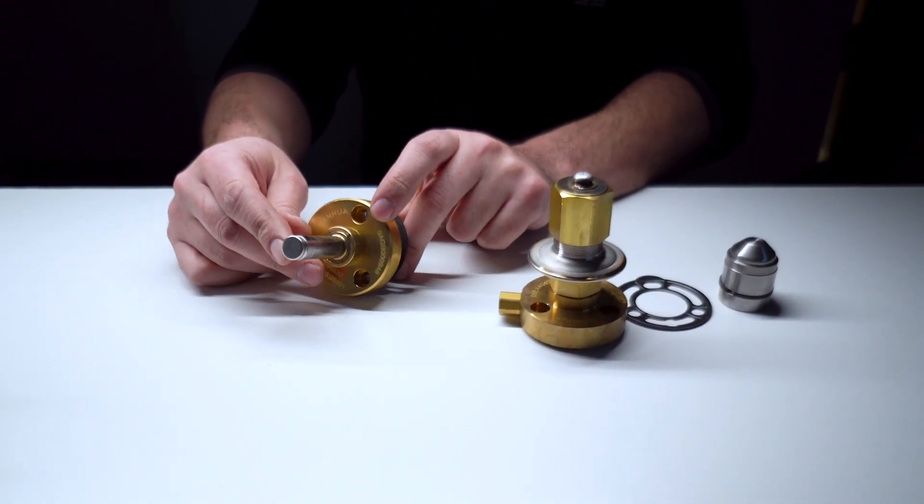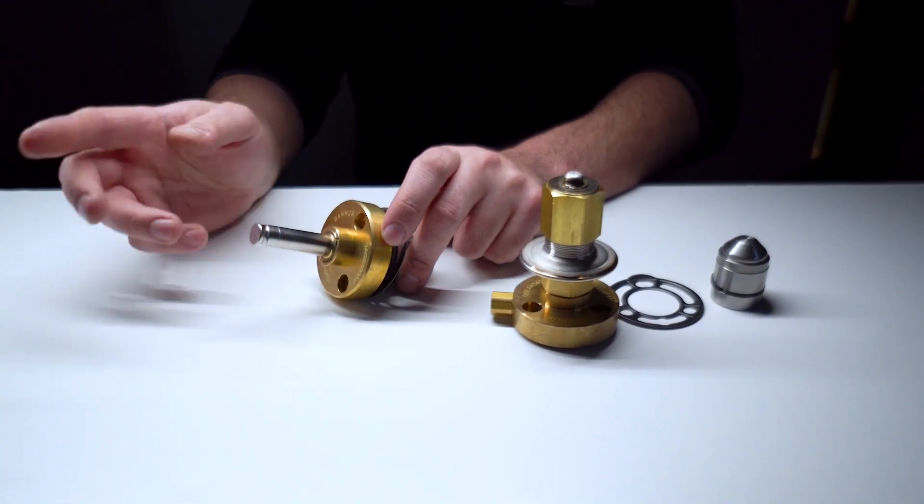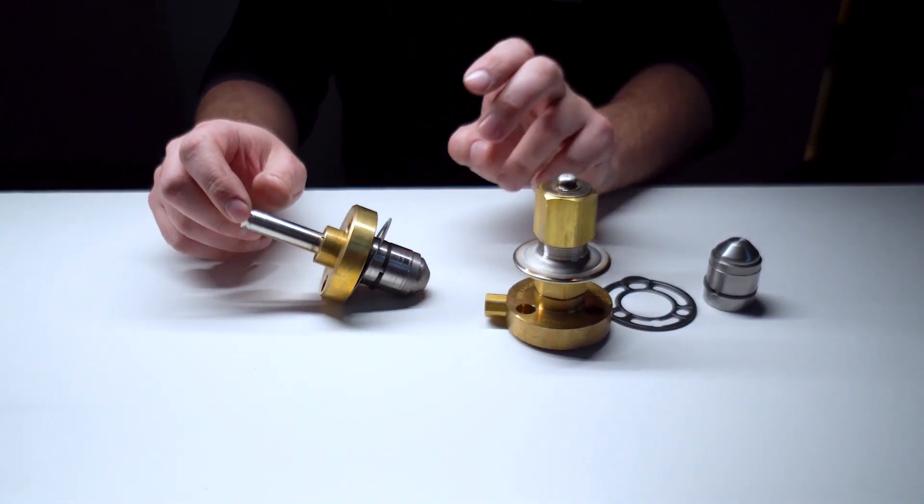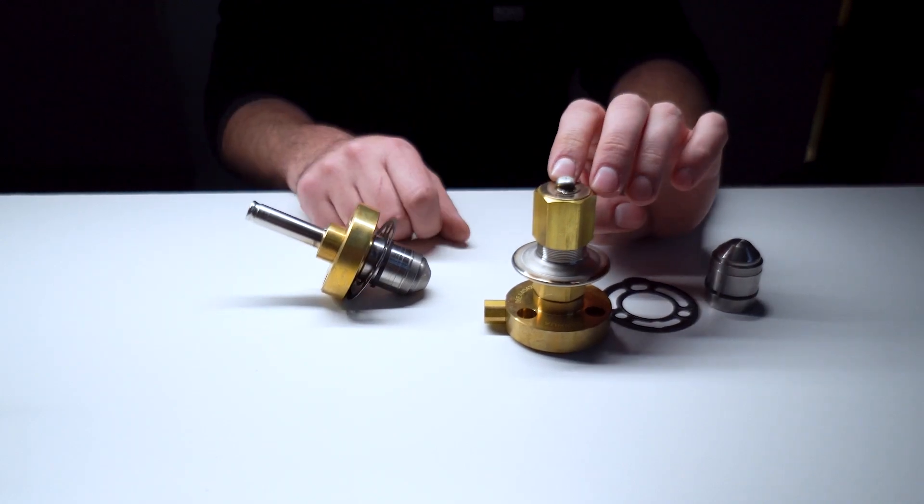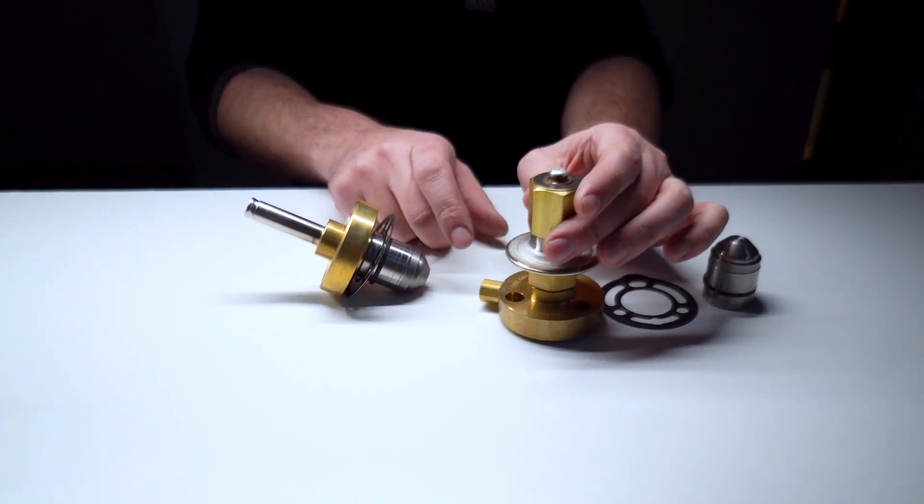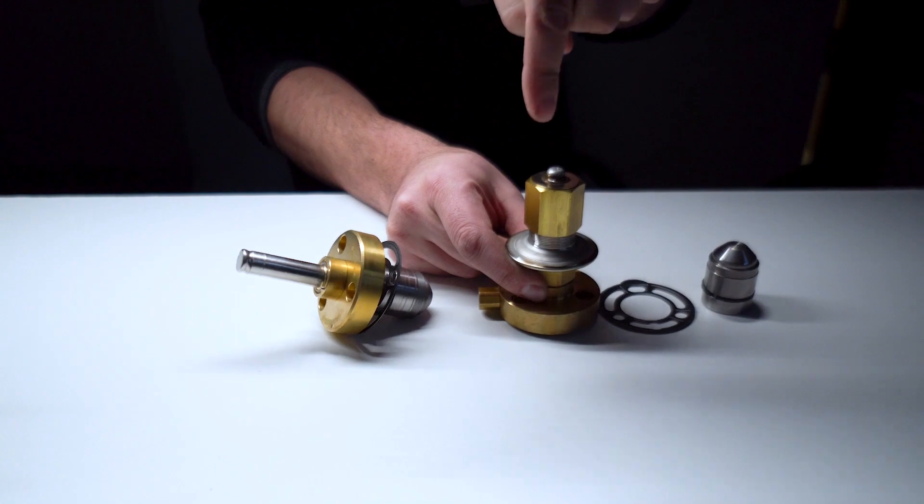So with the solenoid style unloader, it's controlled by a solenoid coil. On the pressure style unloader at the top, you have the control set point adjustment nut which can be screwed up or down.